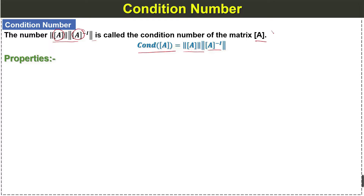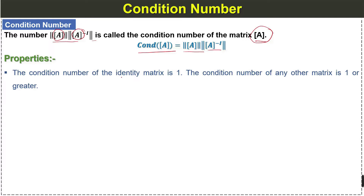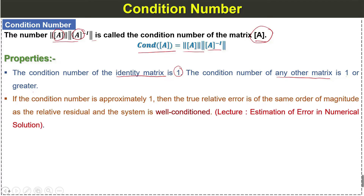Here we have some properties of the condition number. First property: the condition number of the identity matrix is always 1, and the condition number of any other matrix is 1 or greater. Second property: if the condition number is approximately 1, then the true relative error is of the same order of magnitude as the relative residual.